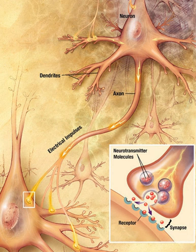An electrical synapse is an electrically conductive link between two abutting neurons formed at a narrow gap between the pre- and postsynaptic cells, known as a gap junction. At gap junctions, cells approach within about 3.5 nm of each other, rather than the 20–40 nm distance that separates cells at chemical synapses. As opposed to chemical synapses, the postsynaptic potential in electrical synapses is not caused by the opening of ion channels by chemical transmitters, but rather by direct electrical coupling between both neurons. Electrical synapses are faster than chemical synapses and are found throughout the nervous system, including in the retina, the reticular nucleus of the thalamus, the neocortex, and the hippocampus.